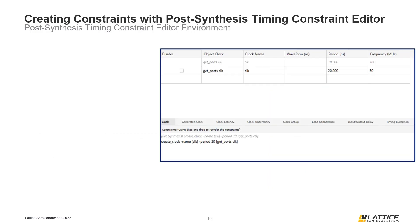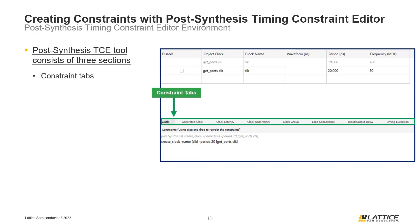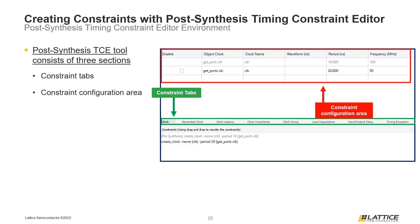Once the post-synthesis TCE tool has opened, users should see a window similar to the figure in the slide. The post-synthesis timing constraint editor window contains several sections that can be used to generate constraints. In the middle of the window are the constraint tabs. Selecting any of these tabs will allow users to generate that type of constraint. Once a tab has been selected, the constraints editor area for that tab will update in the region above the constraint tabs. At the bottom of the window is the constraints preview area, where a preview of the generated constraints will be displayed.